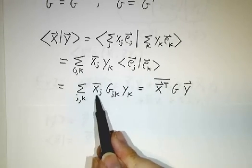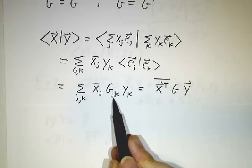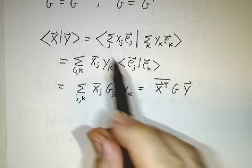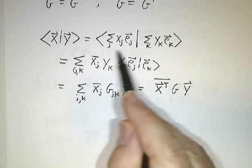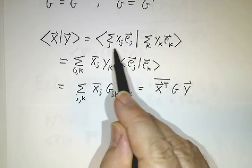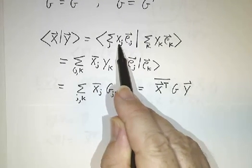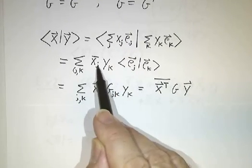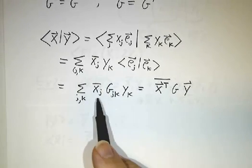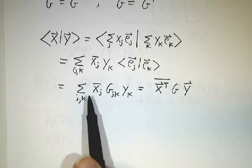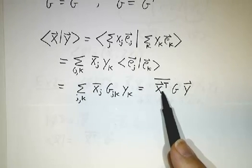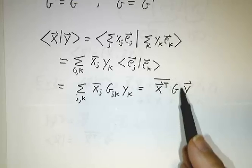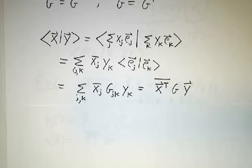So you have the sum of x_j bar G_jk y_k. Now, why do we have an x_j bar? Because the inner product is antilinear in the left-hand term. Here, x_j is a constant. When you pull it out, you have to conjugate it. So the end result is that our inner product looks like a row, x transpose conjugate, times a matrix, times y.